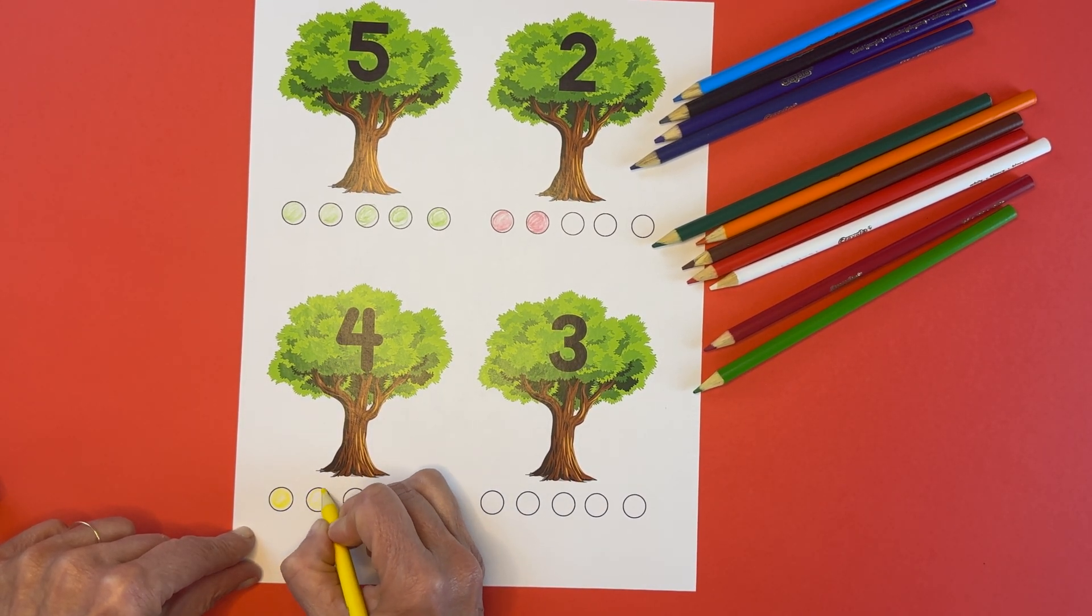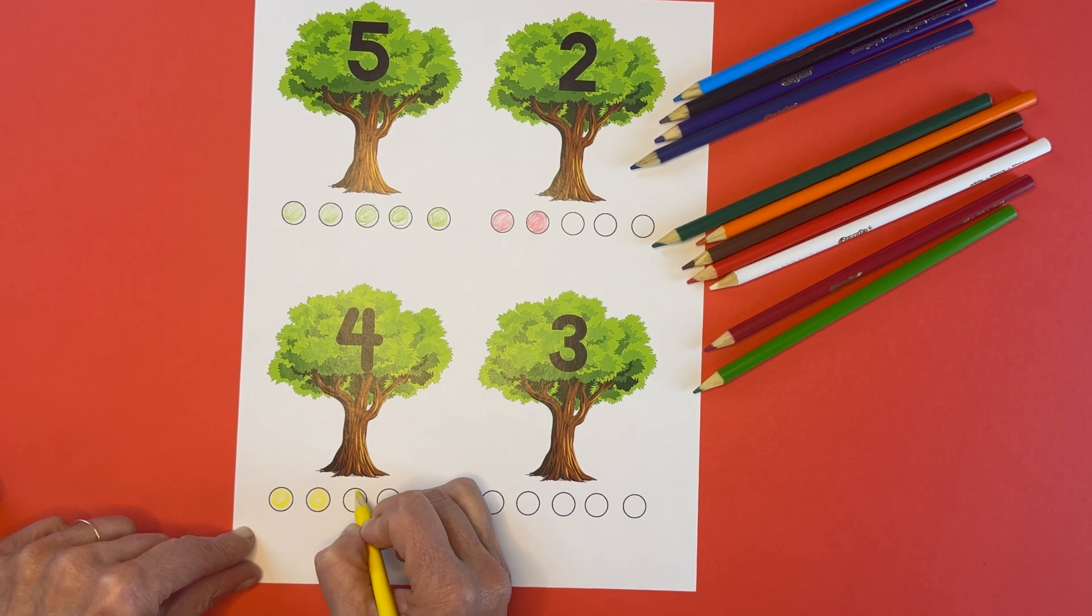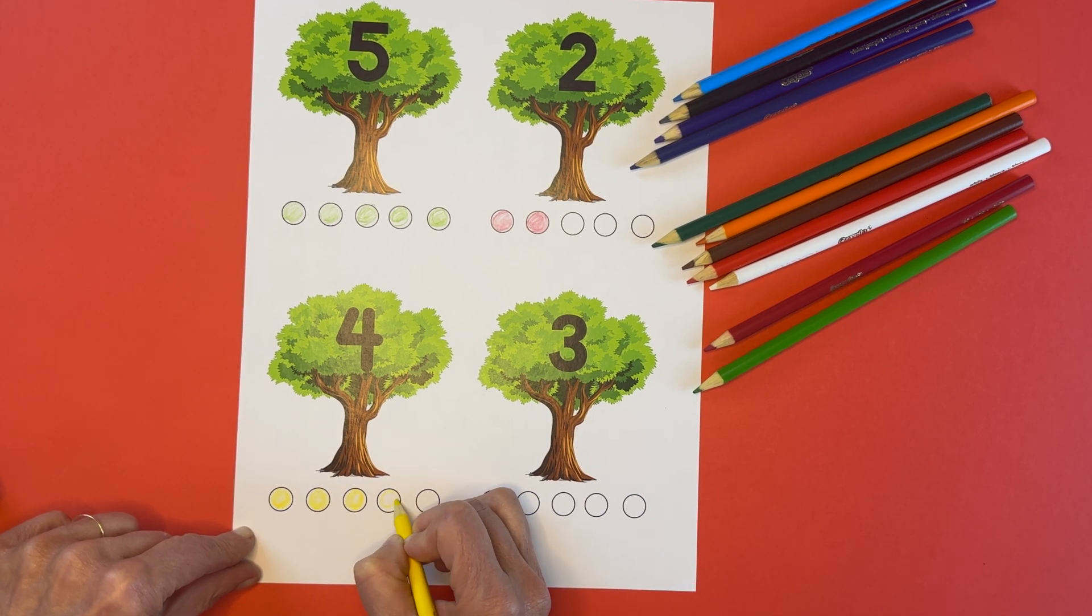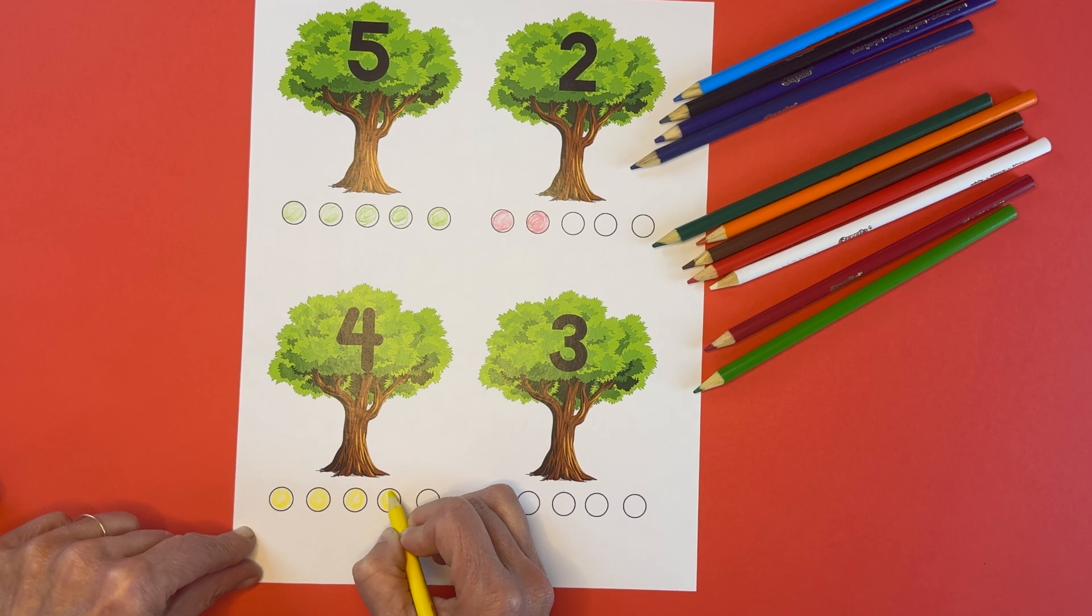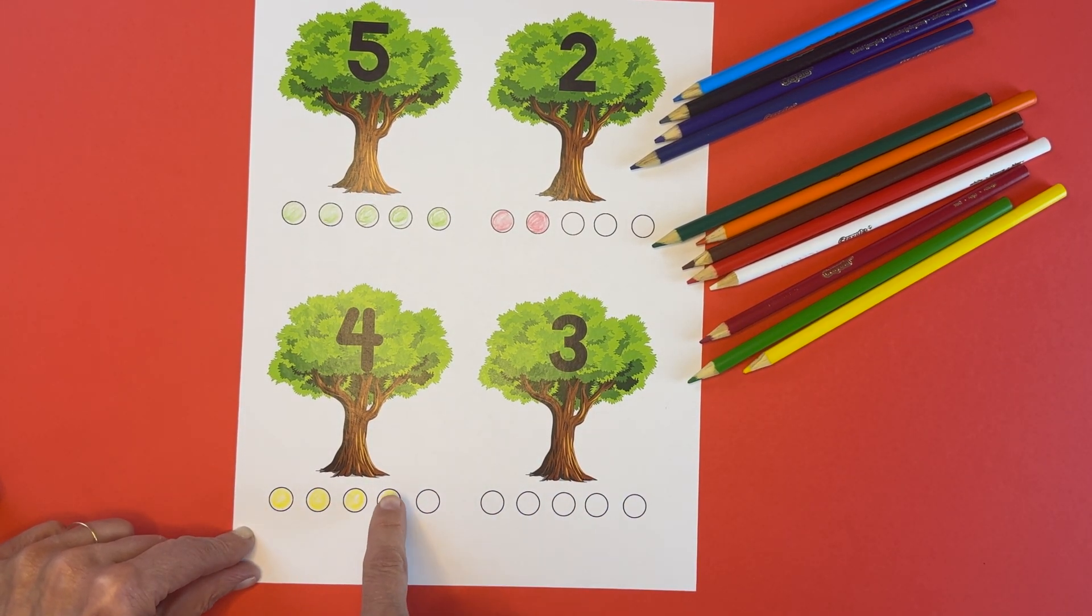And we have, because it's number four apple tree, we're going to color in how many? That's right. Four golden apples. One, two, three, and then number four. There it is. All right. One, two, three, and four.